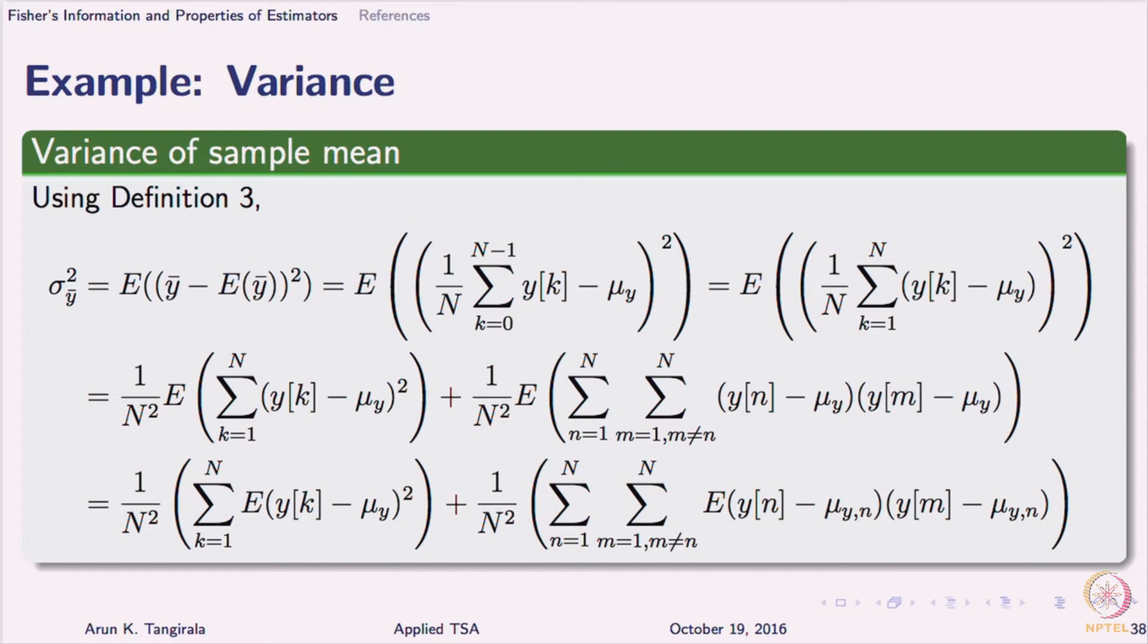Look at the last expression. There are two terms that you see. What is the first term? What does the first term work out to? In the summation, you have expectation of (yk - μ) to the whole square. What is that?